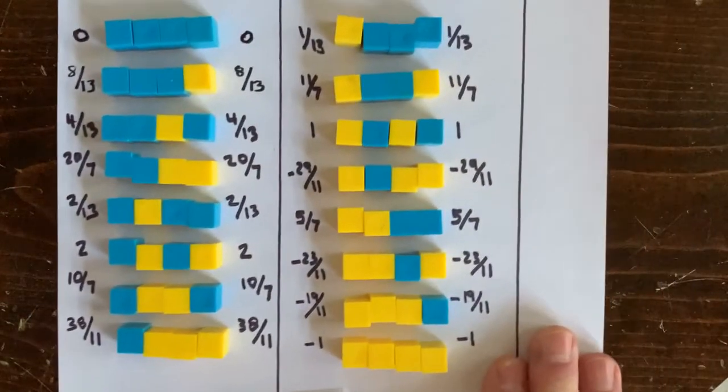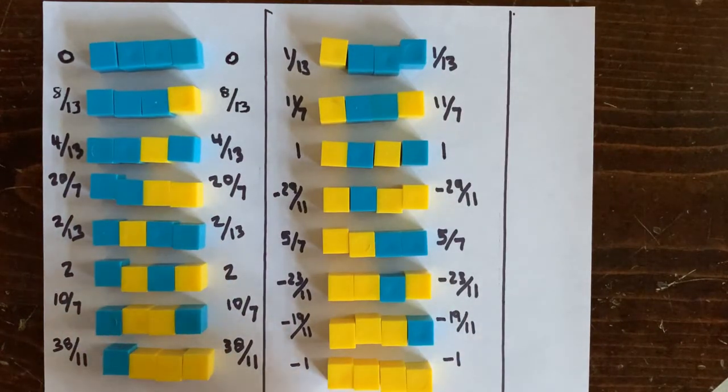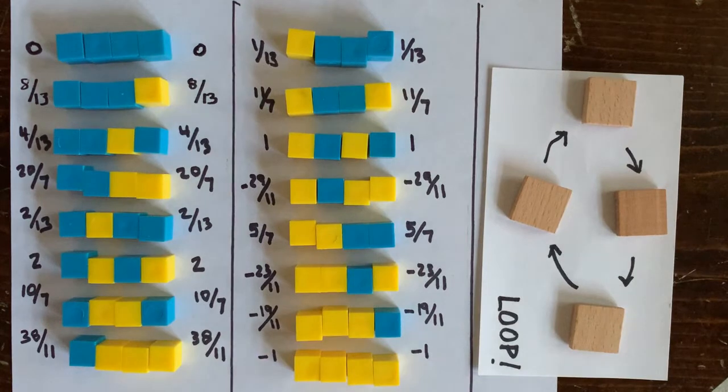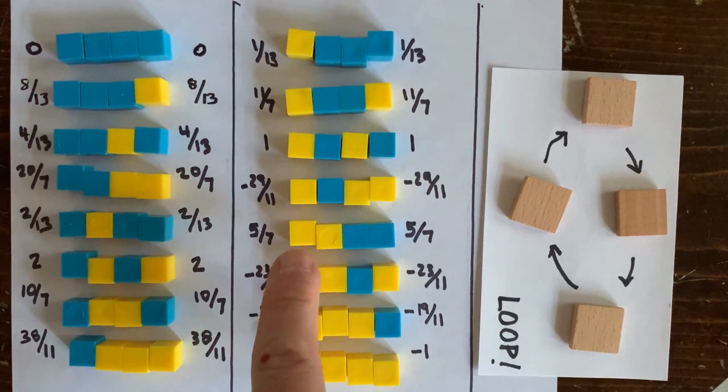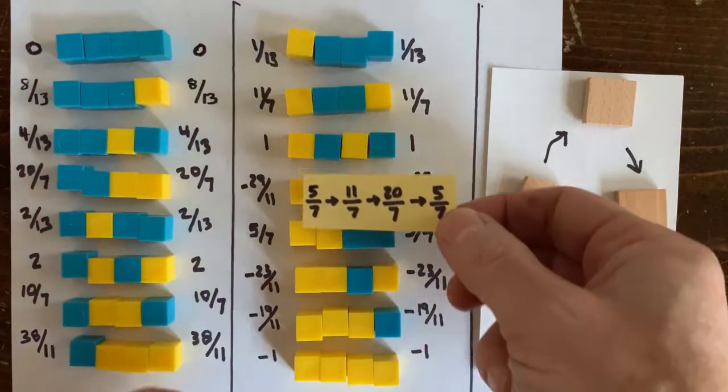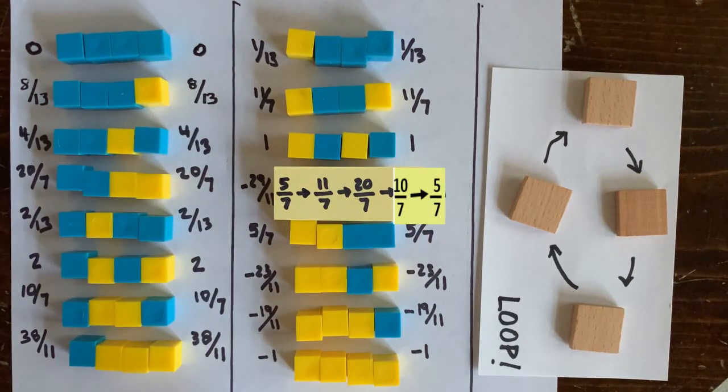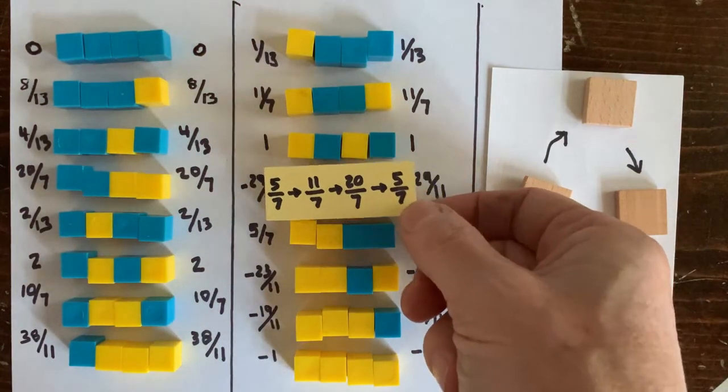There are only 16 operation sequences of length 4, and here they are. So we can take each one of them and solve for m like we've been doing in previous episodes. For example, the only number that forms a loop with this operation sequence is 5 over 7. And here's the concrete loop.